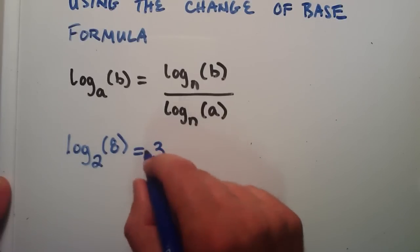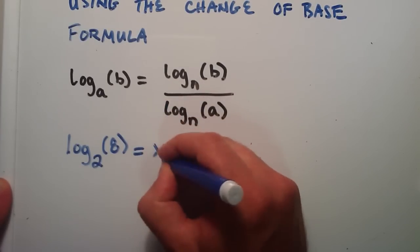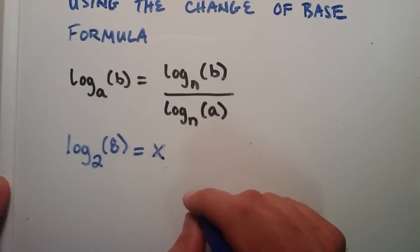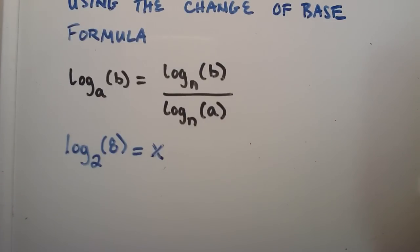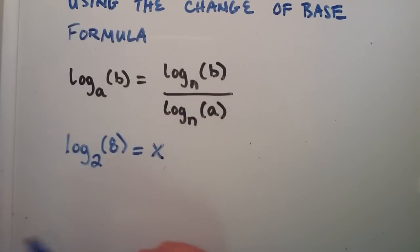But let's say that we couldn't figure out what this number is, and we want a different way to figure out what it is. We just can't see it for whatever reason. So we're going to go ahead and solve this same problem by using the change of base formula.